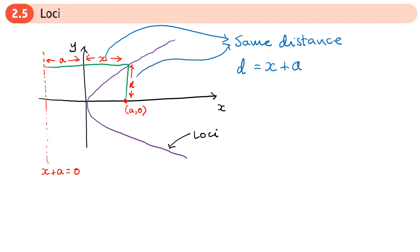Because we're going to use Pythagoras to prove these distances are the same, we can also say that d squared equals (x plus a) all squared.